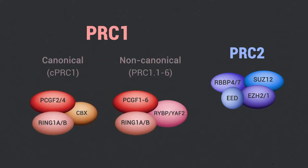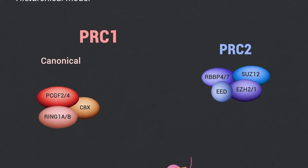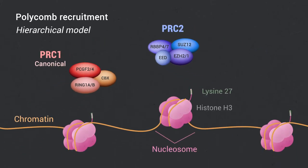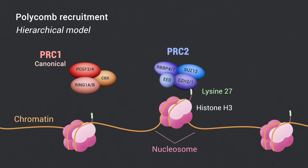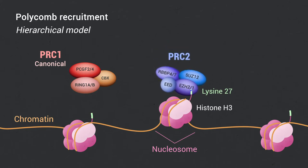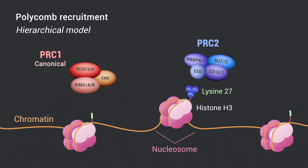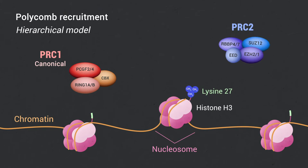They can be stratified into canonical and non-canonical PRC1. In the hierarchical model of Polycomb recruitment, the PRC2 complex is first recruited on chromatin and trimethylates lysine-27 of histone H3.